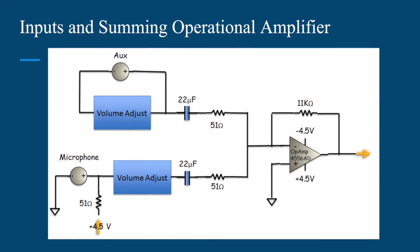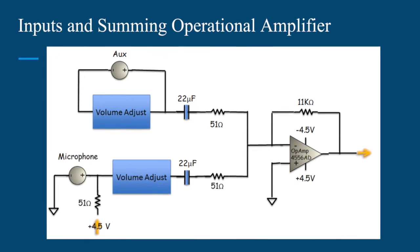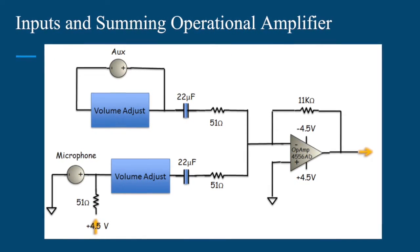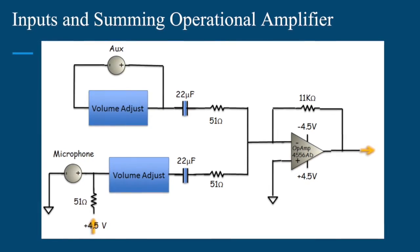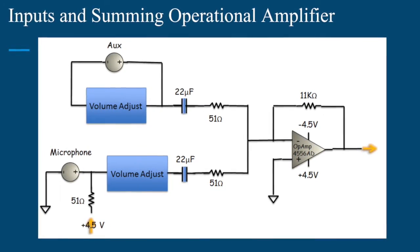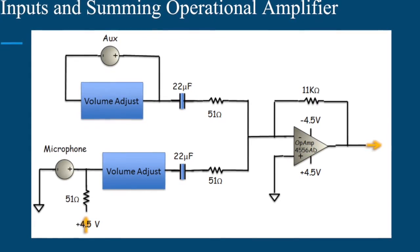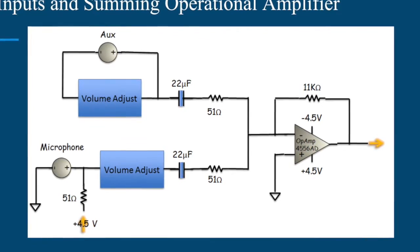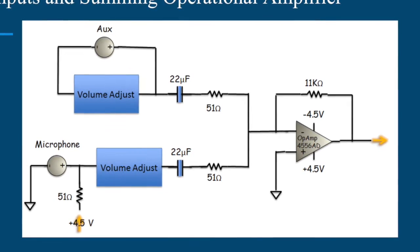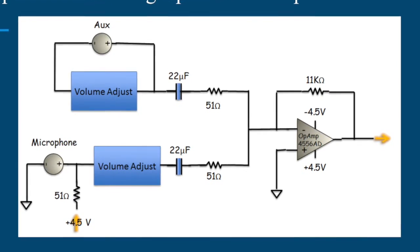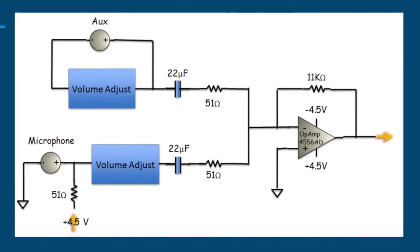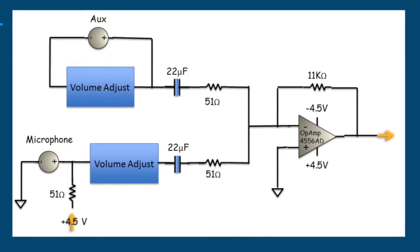This is a schematic representing the inputs and the summing operational amplifier. Inputs are taken from a microphone and an aux cord and then they're fed into a volume control. These signals are fed through capacitors which prevent feedback into the inputting devices. The signals are then fed into negative feedback op-amp which will combine the two signals into one.